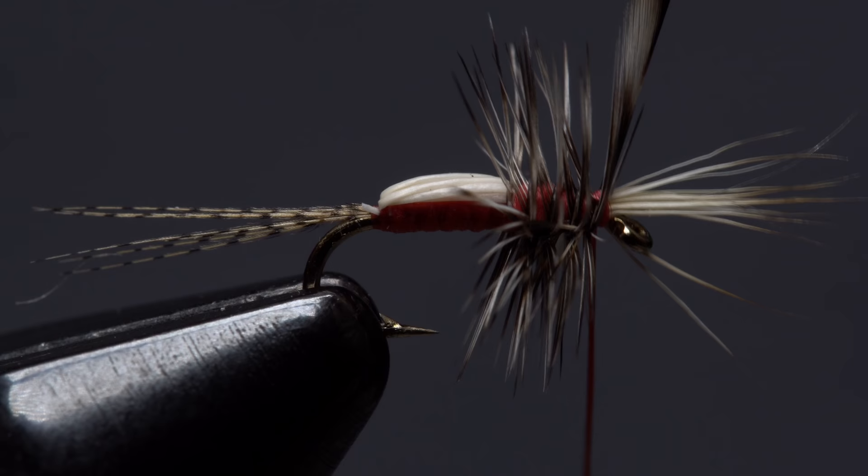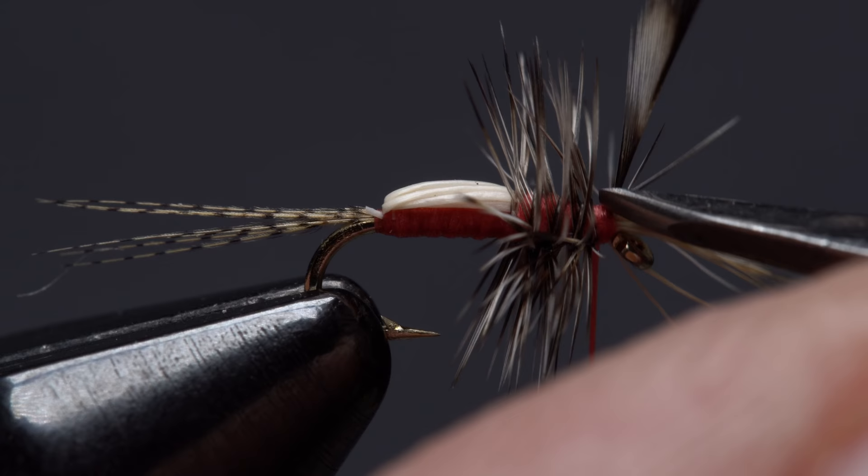Get hold of the hackle feather and start making touching wraps with it forward up the shank. Three to four turns should be plenty. When you get to your tying thread use it to anchor the hackle stem then reach in with your tying scissors and snip the excess off close.